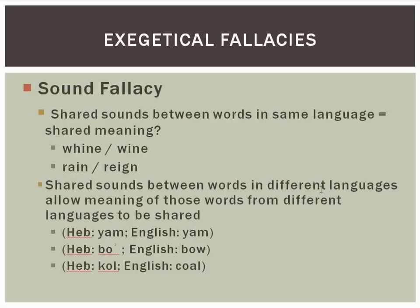Next: the sound fallacy, with two varieties. The first is that shared sounds between words in the same language create a shared meaning. Two English examples: the words 'whine' and 'wine' — there's no inherent semantic relationship between the two. The same thing for 'rain,' r-a-i-n, and 'reign,' r-e-i-g-n. One is water that falls from the sky, the other is kingship or rulership. There's no relationship between them, even though they sound exactly the same.